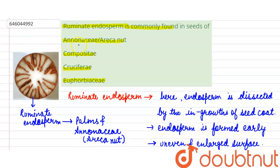Now if we discuss the options, first option says that ruminate endosperm is found in Anonaceae and Areca nut, which is correct. Second option says it is found in Compositae, which is incorrect. Third option is Cruciferae, which is also incorrect with respect to ruminate endosperm, and the last option is Euphorbiaceae, which is again incorrect.